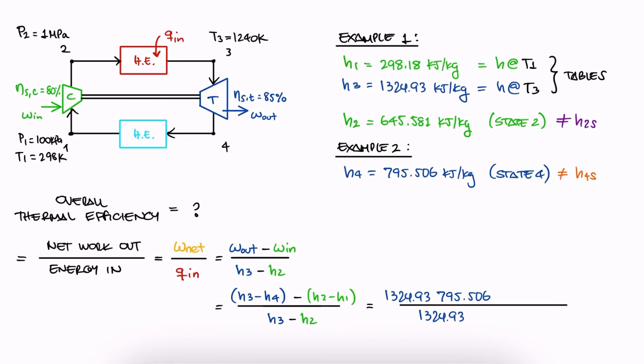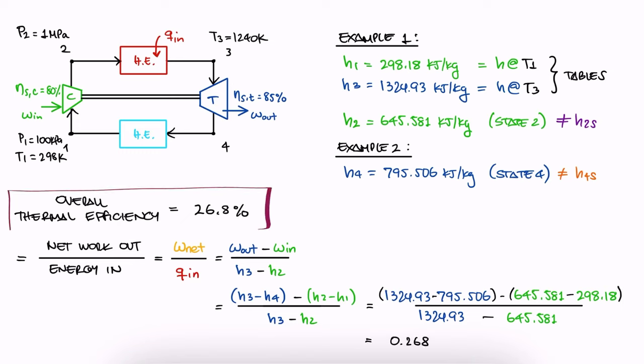We substitute the values, and we find that the overall efficiency of this Brayton cycle is 26.8%.